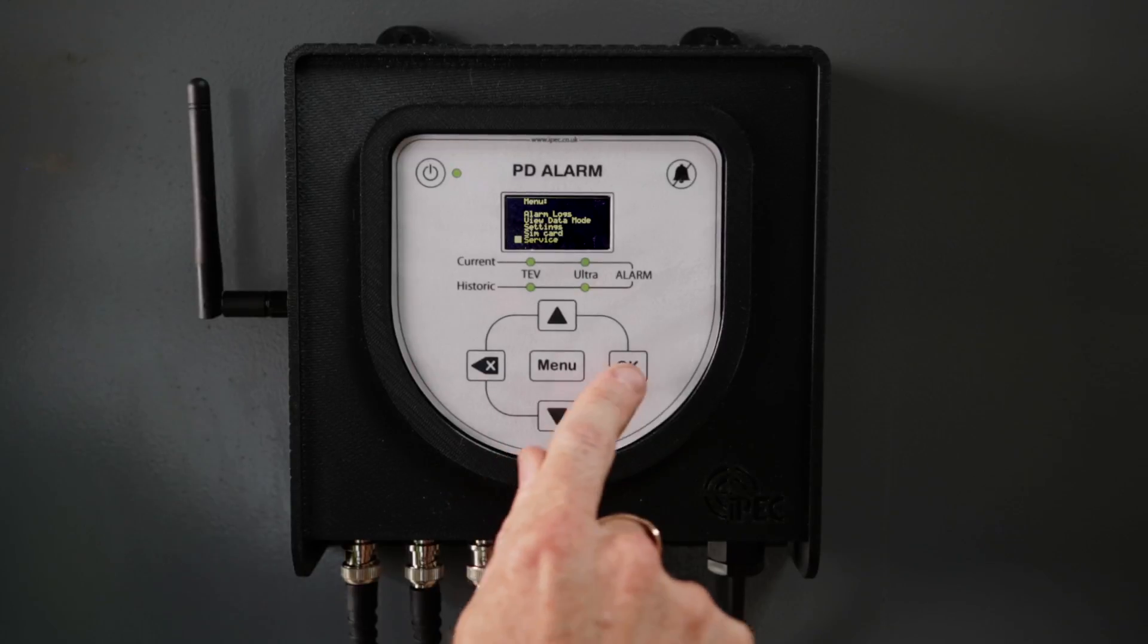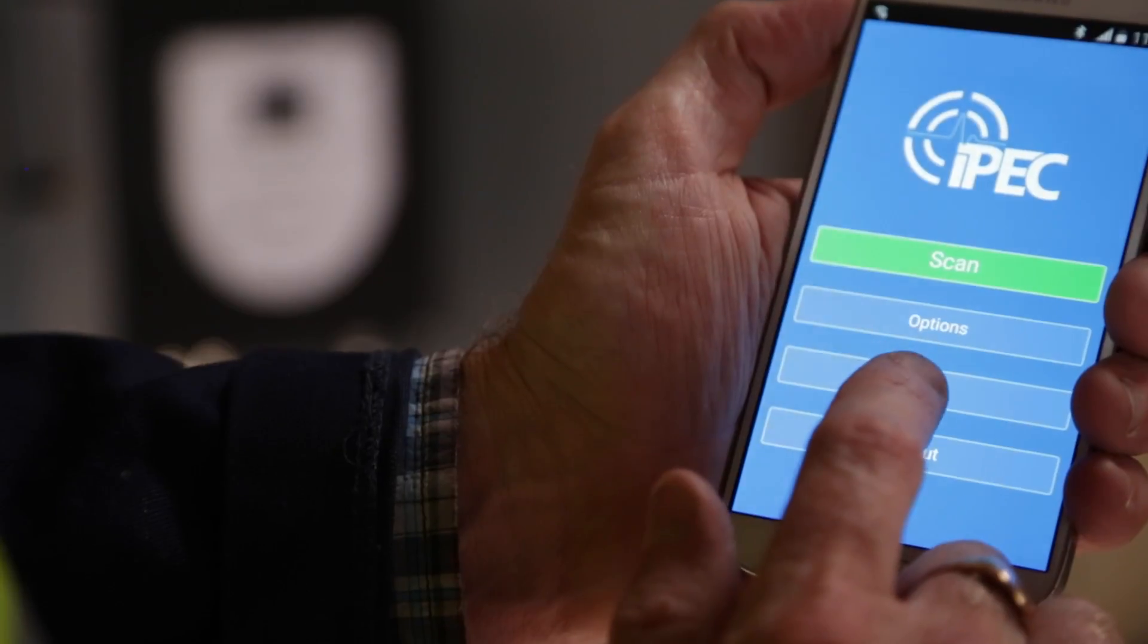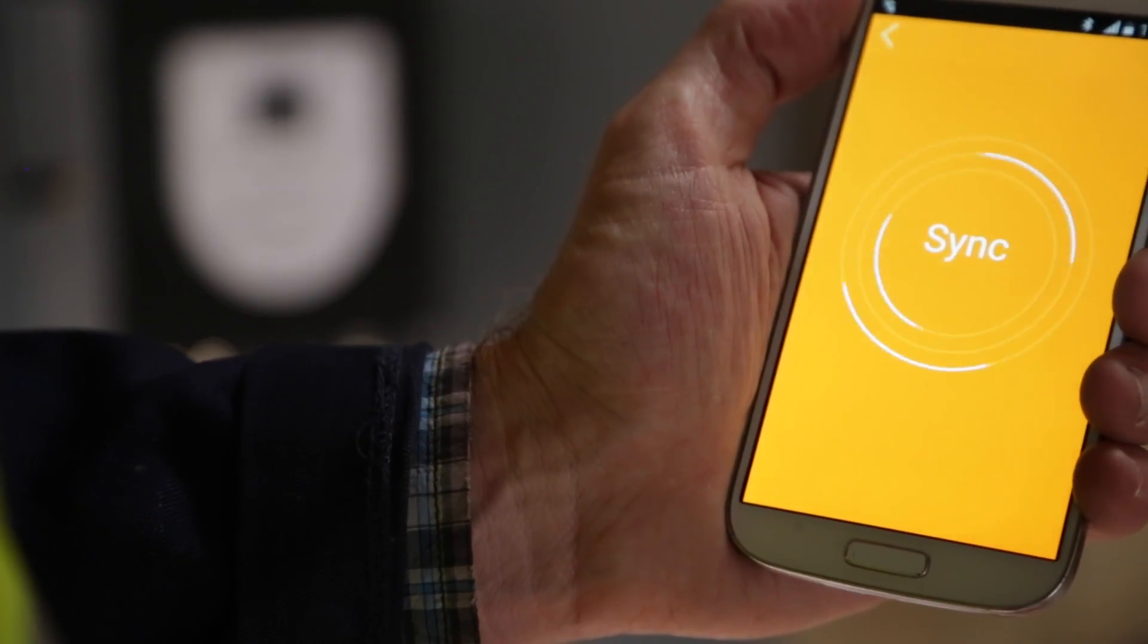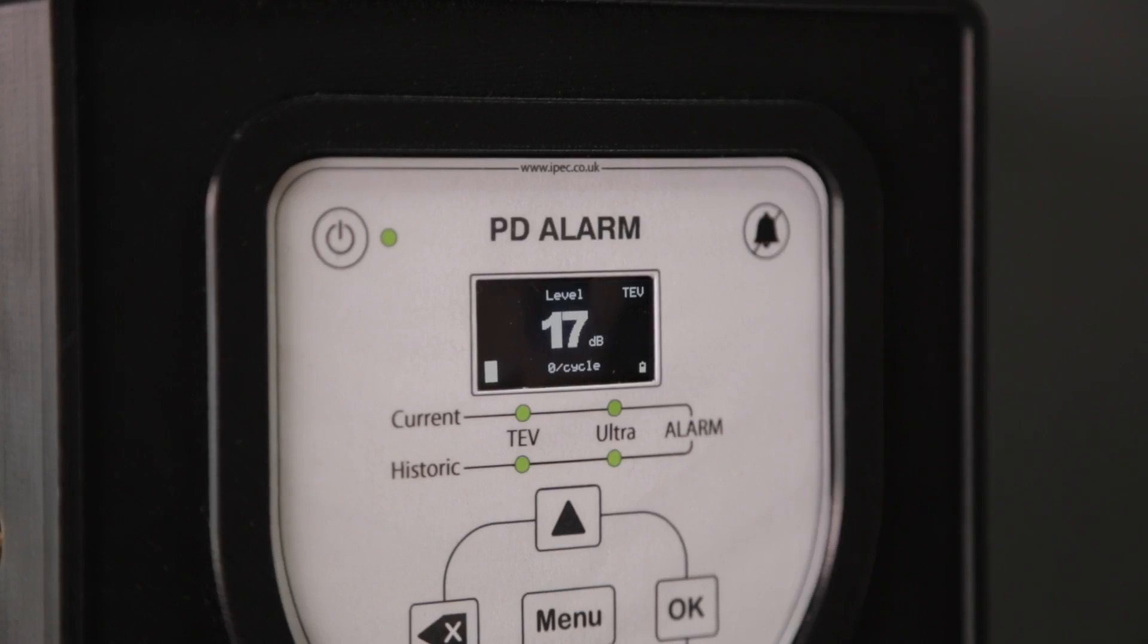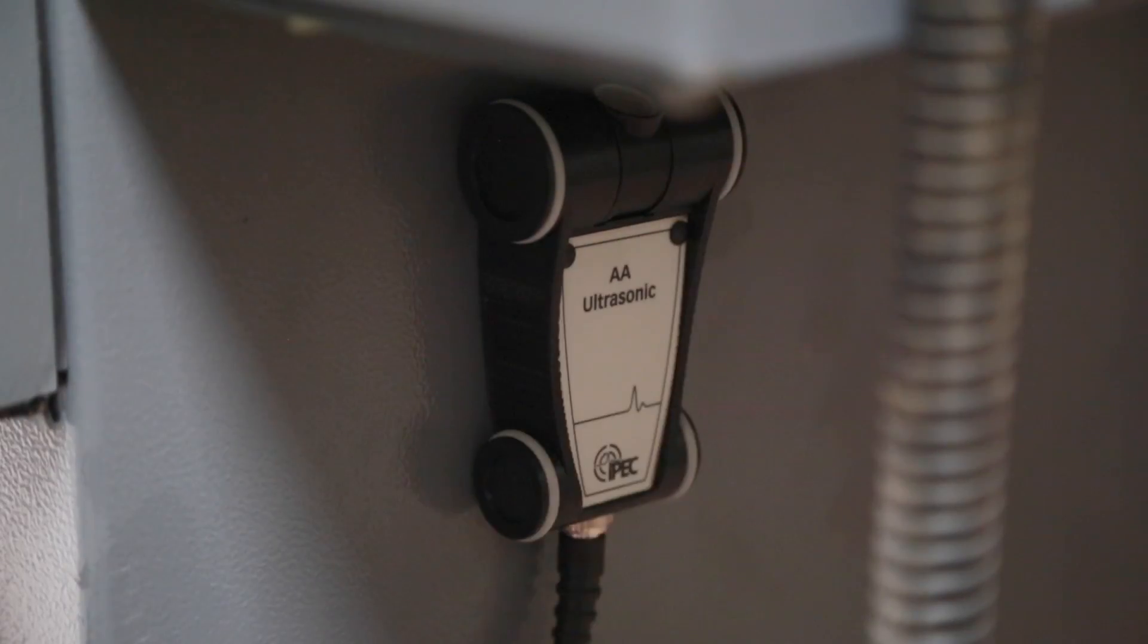Setup is quick and simple using a laptop or mobile phone connecting to the monitor via Bluetooth. The PD alarm captures real-time activity through its built-in TEV sensor and up to three ultrasonic detectors. Signals are synchronized with the local power cycle.